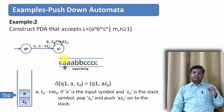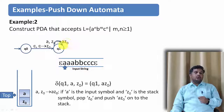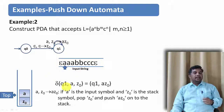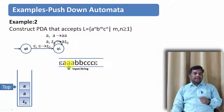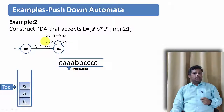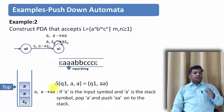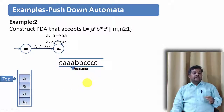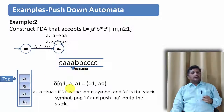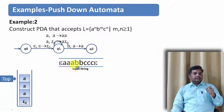We start: δ(q0, ε, ε) = (q1, Z0). When the first a appears with Z0 on top, push aZ0: δ(q1, a, Z0) = (q1, aZ0). For subsequent a's with a on top, push aa: δ(q1, a, a) = (q1, aa). This continues for all a's, keeping us in state q1.